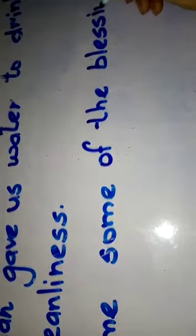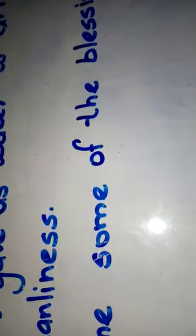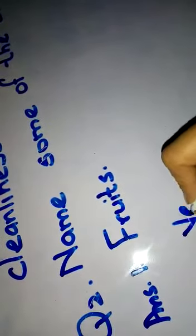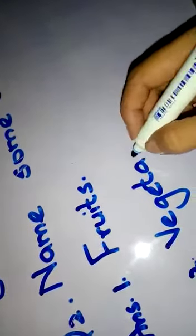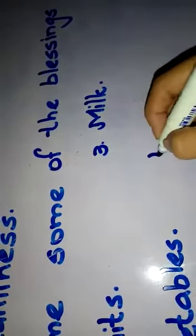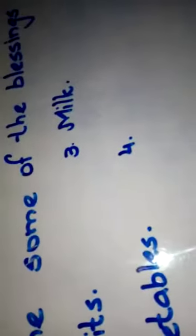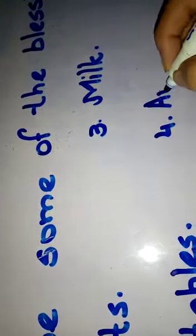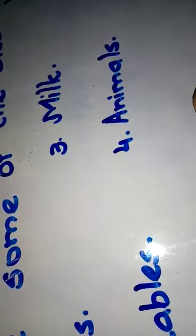The blessings of Allah. What we are going to add. Put a full stop in the end. So what's the answer. Fruits. Number two, vegetables. I don't have space here that's why I'm going to write it here. Number three, milk. Number four, animals. Number five, water.